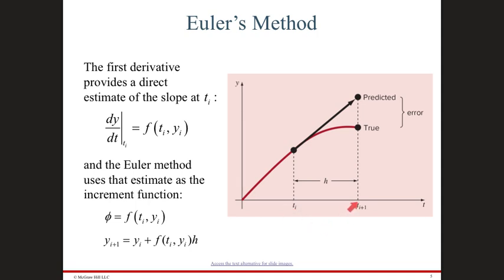If you multiply the step h by the slope, you get the y increment. If you assume that at this point the function is extrapolated as a straight line, you take the value at the current point, add the step h multiplied by the slope, and that gives you the new location. Of course, if you take a very large step, you can deviate a lot from the true value. But if you take small steps, the slope changes at each step and you become closer and closer to the true function.